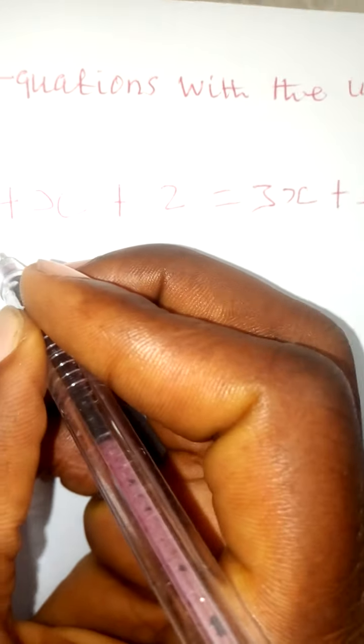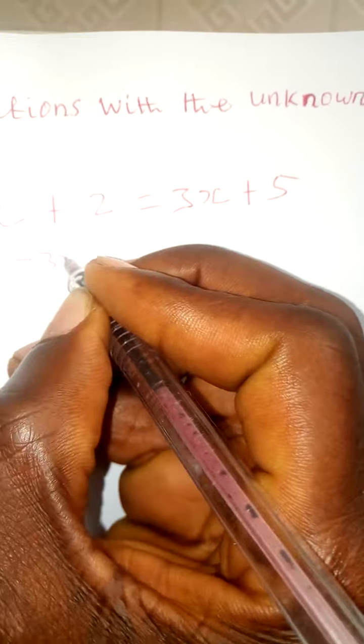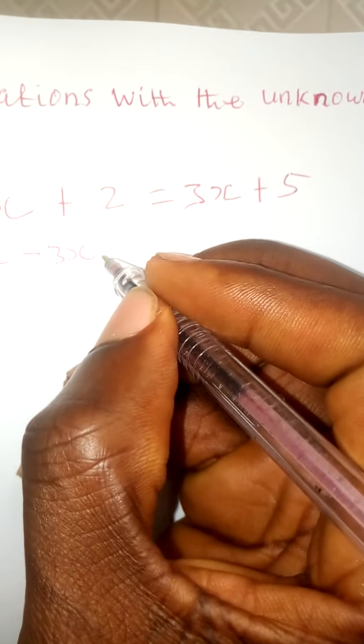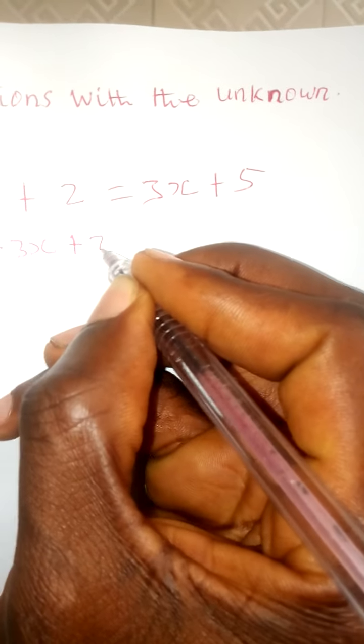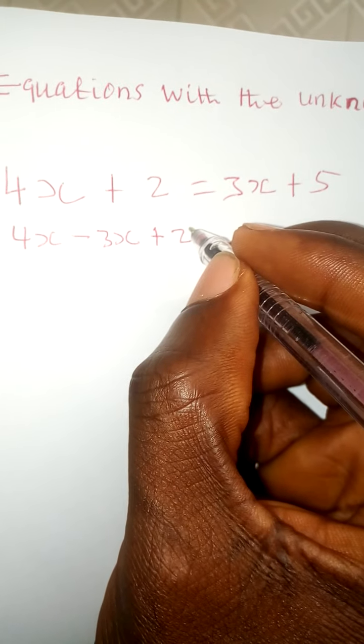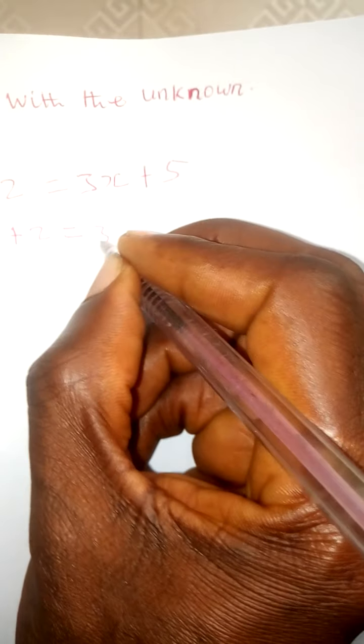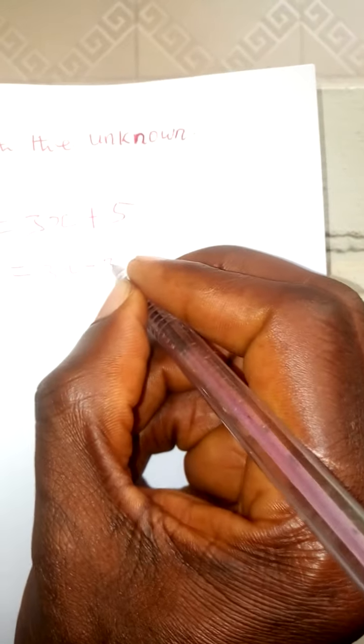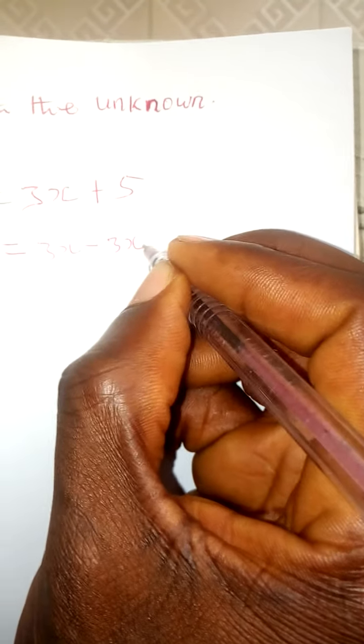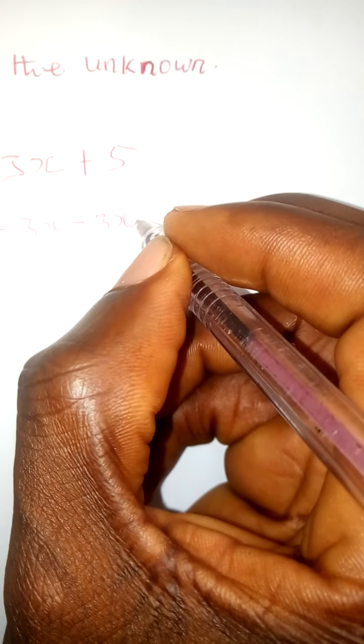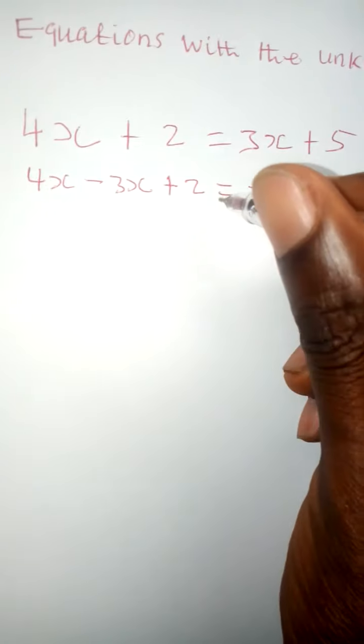Now I want to show this. I can say this is 4x minus 3x. Remember like terms, so we're going to have plus 2. We bring down the equal sign, then we have 3x minus 3x. We're subtracting 3x from both sides.